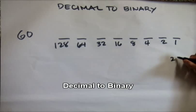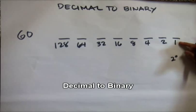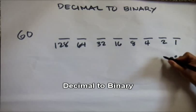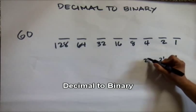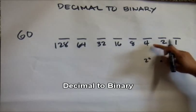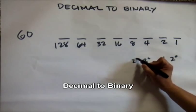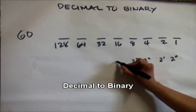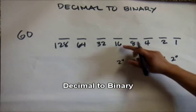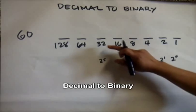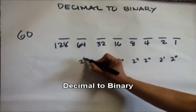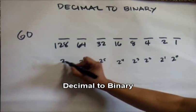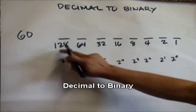Two to the power of one is 2. Two to the power of two is 4. Two to the power of three is 8. Two to the power of four is 16. Two to the power of five is 32. Two to the power of six is 64, and two to the power of seven is 128.